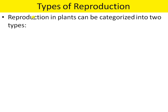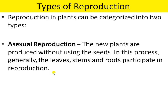Next is the types of reproduction. Reproduction in plants can be categorized into two types: asexual reproduction and sexual reproduction. In asexual reproduction, new plants are produced without using seeds. In this process, generally the leaves, stem, and roots participate in reproduction. Asexual reproduction means new plants are produced from the existing plant without the formation of seed. From one plant, many plants can be formed.